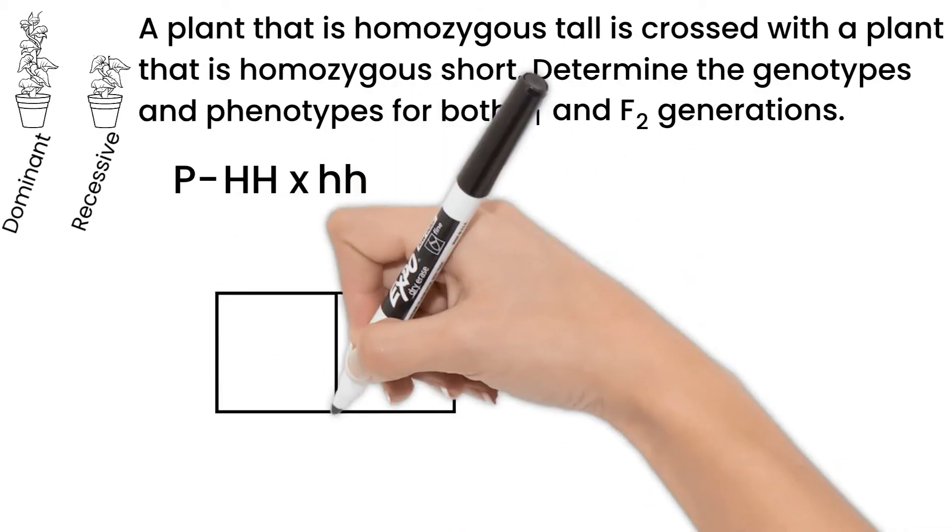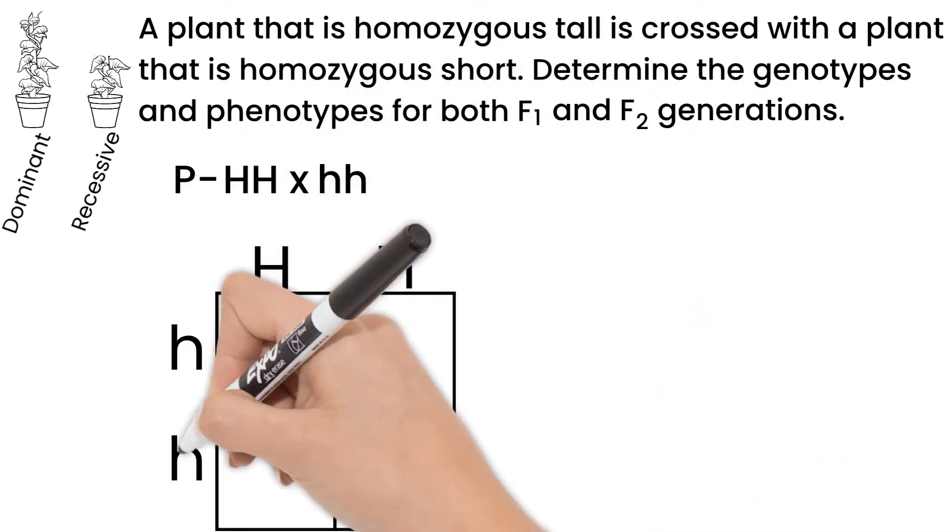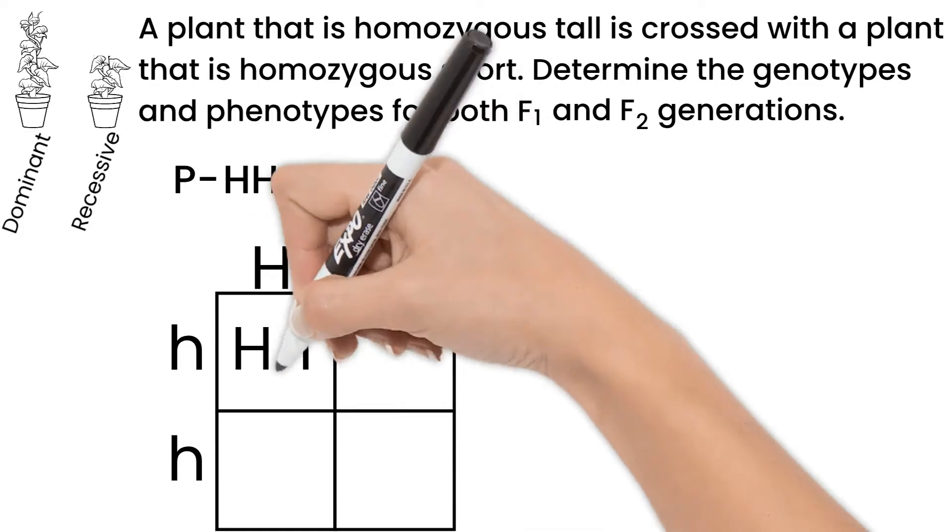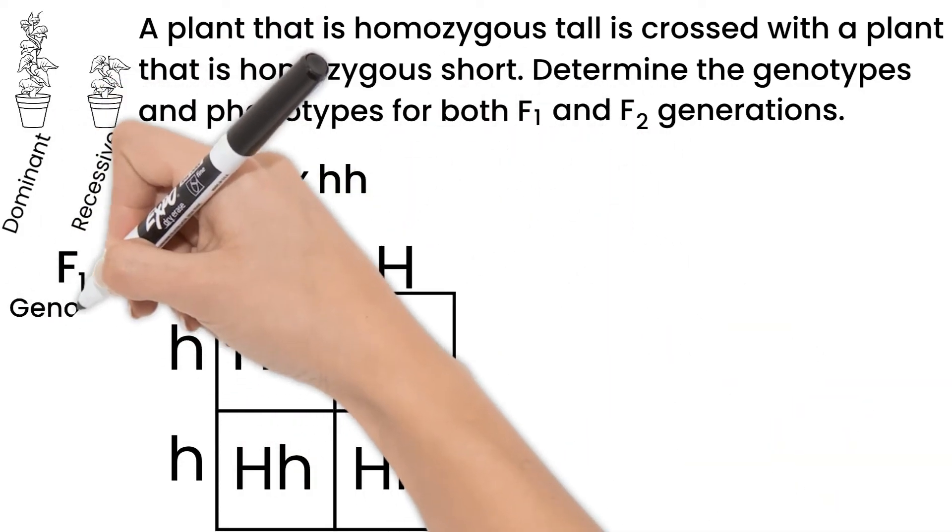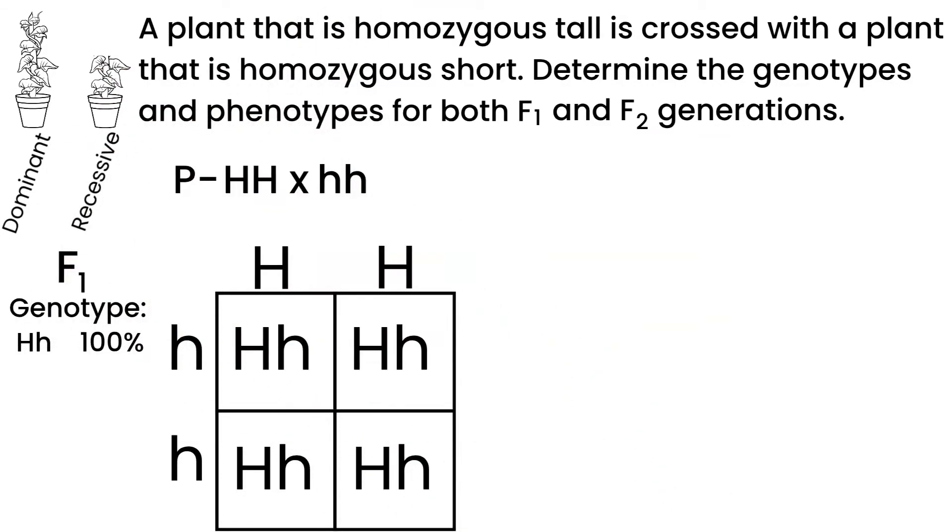Plug these into our Punnett square for our F1 generation and write each possible combination. Our genotype is 100% big H and little h, heterozygous. And our phenotype 100% will be tall.